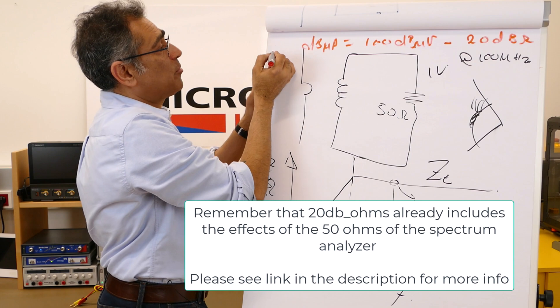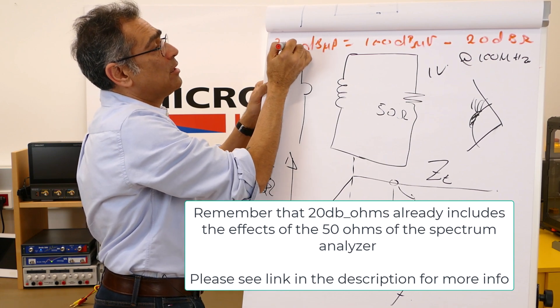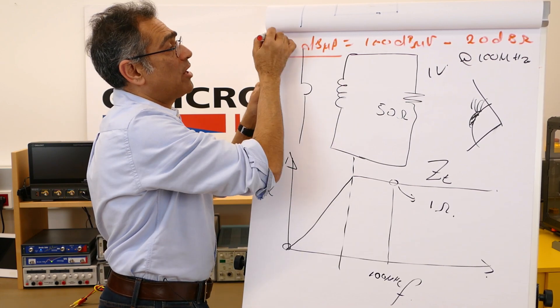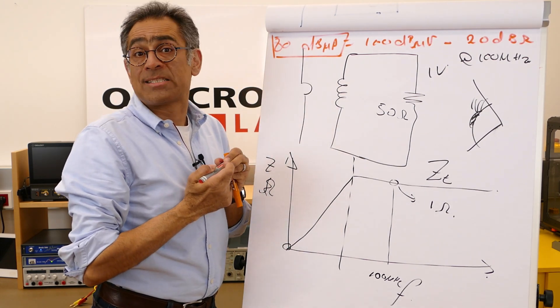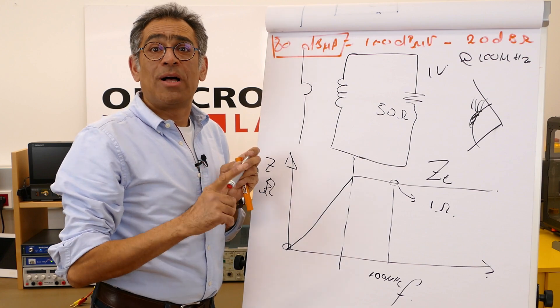Then you only subtract these two from each other and you end up with dB microamps, 80 dB microamps, and of course then you can use this in your other equations in order to estimate the field.